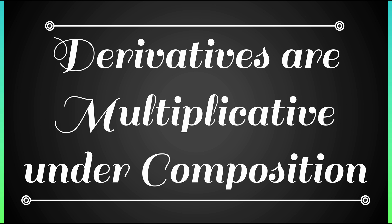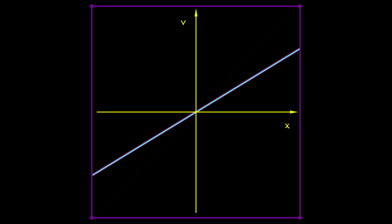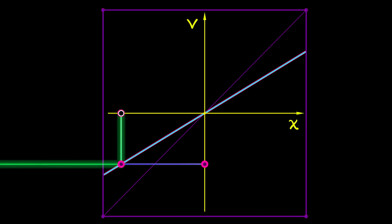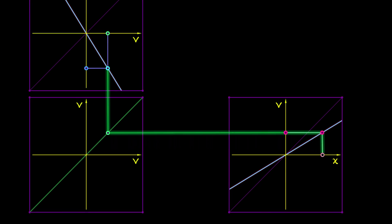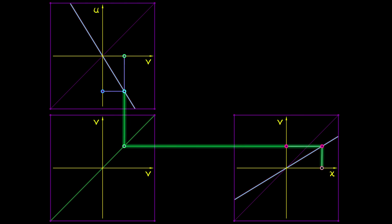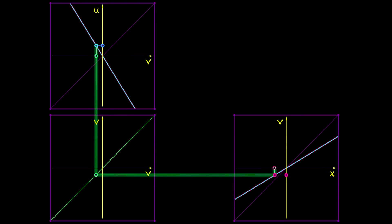For purposes of illustration, let's assume that we have a linear function v as a function of x. And then what we do is we take the output of this function v and we feed it into another linear function u that depends on v.